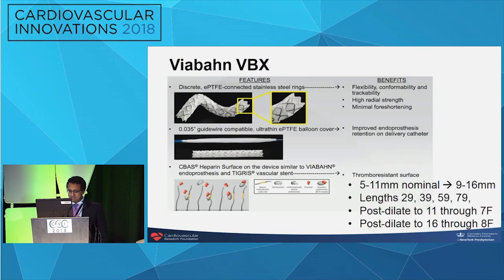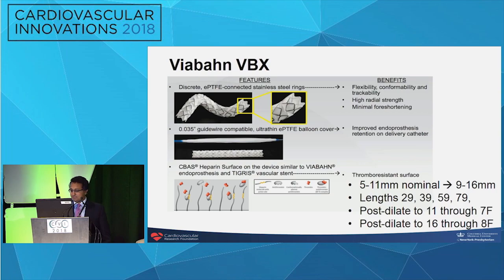More recently there is the VBX from Viabahn. What's really attractive about this is that they're 5 to 11 millimeter nominal diameter and can be post-dilated all the way up to 16 millimeters — and you can achieve a 16 millimeter post-dilation diameter through an 8 French access. For most iliacs, an 11 through a 7 French will get you out of trouble, and the lengths are quite long, up to 79 millimeters. To be truthful, in this situation, had we had the VBX, we might have chosen that device at the time.